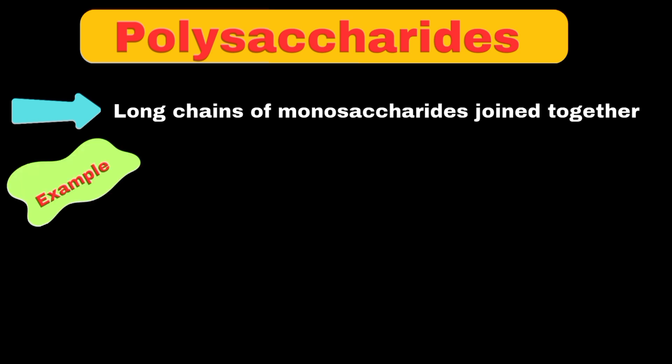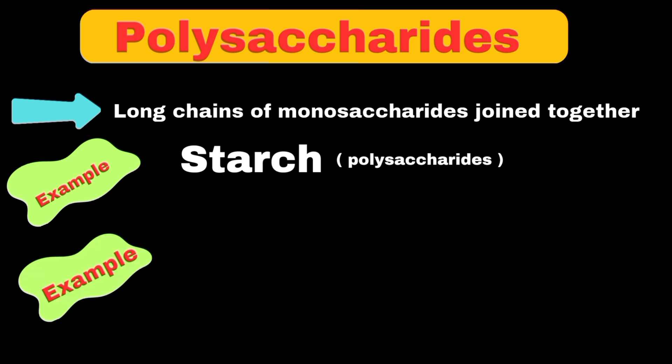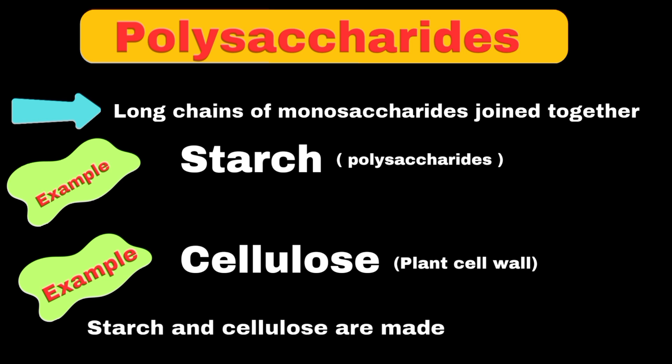Polysaccharides are long chains of monosaccharides joined together. For example, starch, which is found in potatoes and rice, is a polysaccharide made up of hundreds of glucose units linked together. Another example is cellulose, which makes up plant cell walls. Interestingly, both starch and cellulose are made of glucose units, but they differ in how these units are linked together.